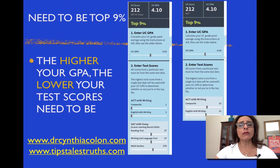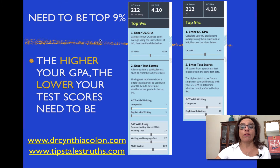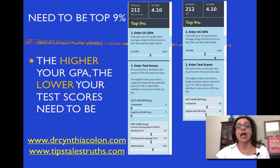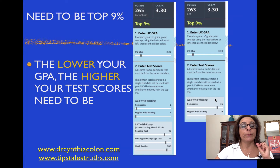The higher your GPA, the lower your test scores need to be. With a 4.1 GPA, I needed to hit these numbers with the SAT, and with the ACT I needed to hit these numbers — much lower than what I just showed you. The lower your GPA, the higher your test scores need to be to hit that top nine percent.